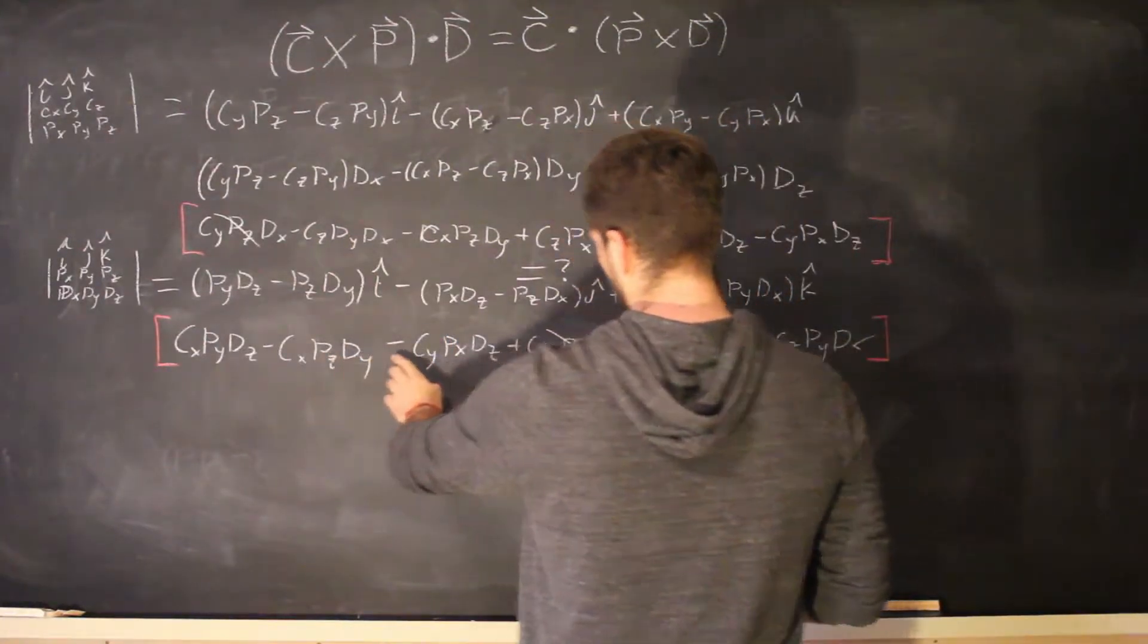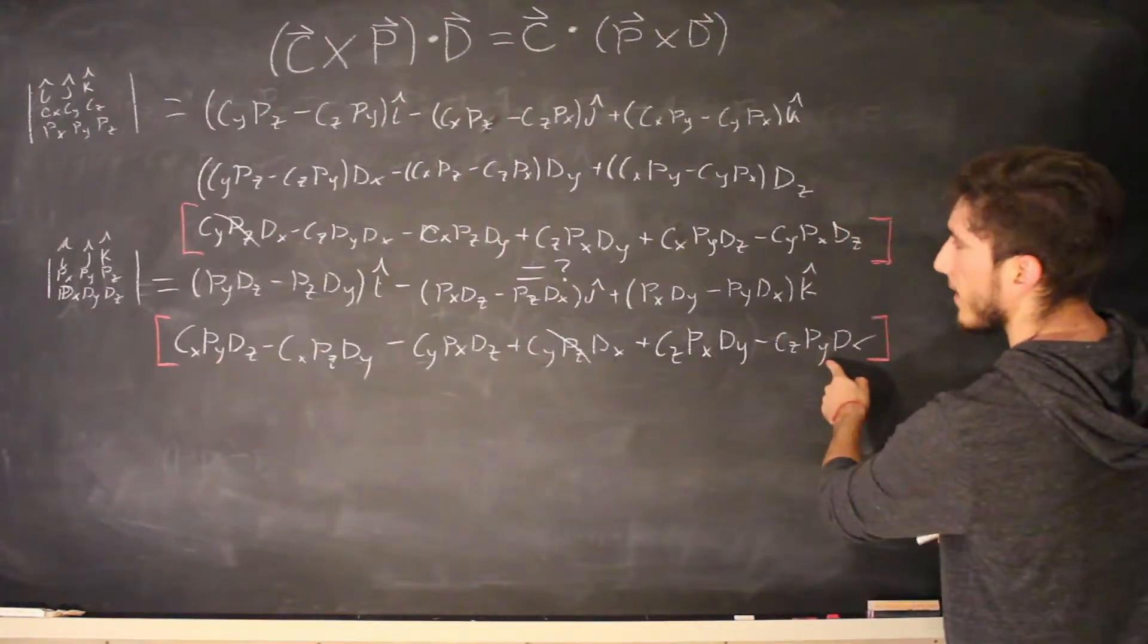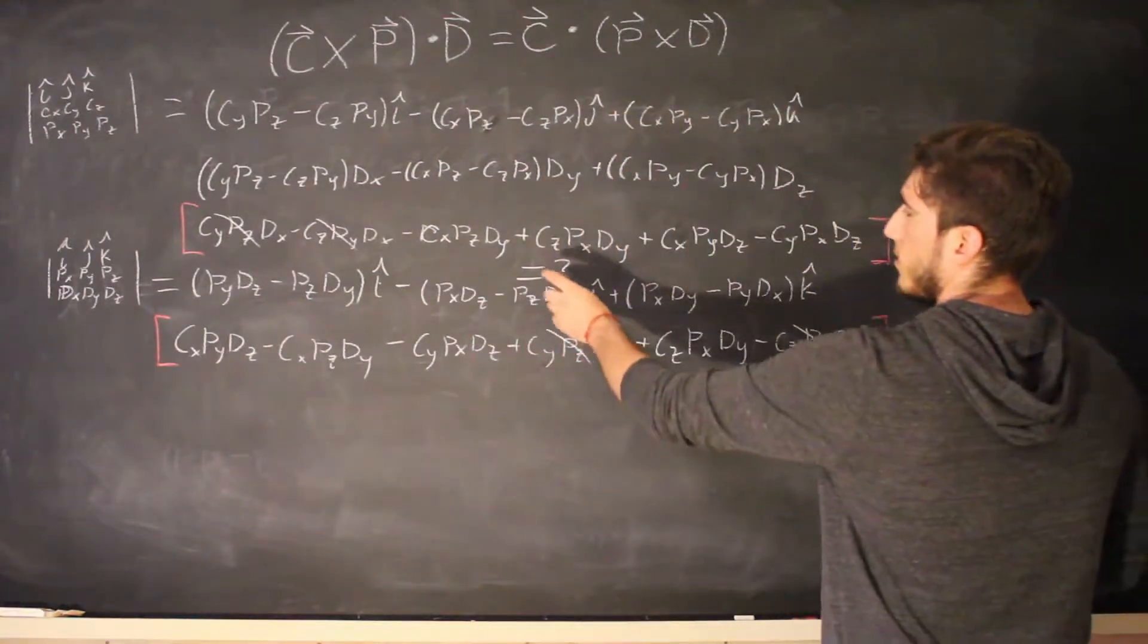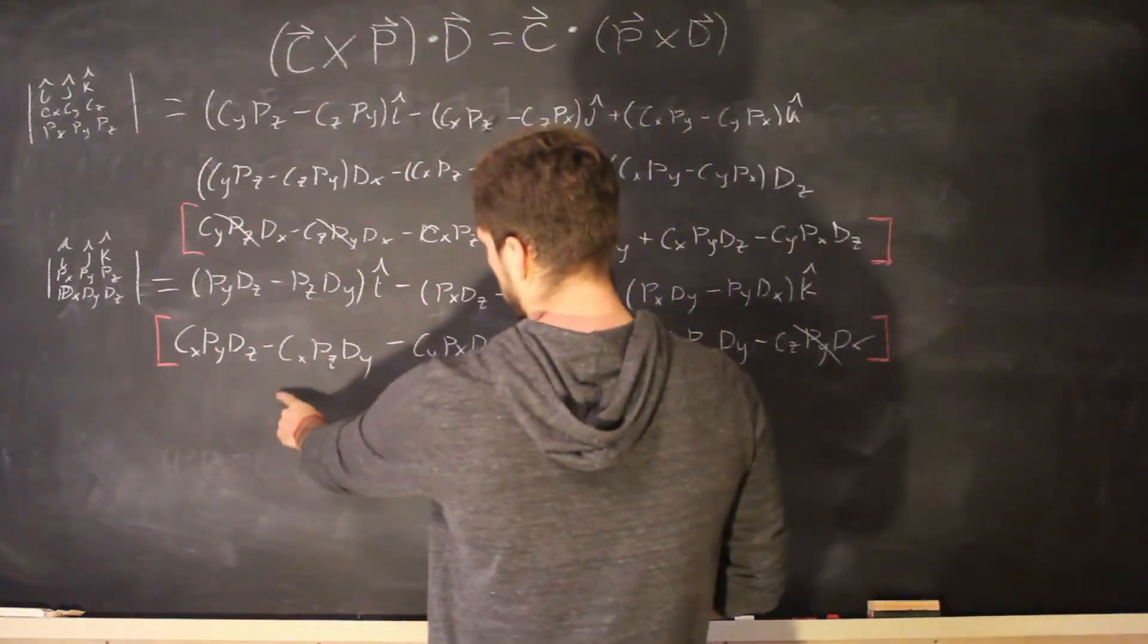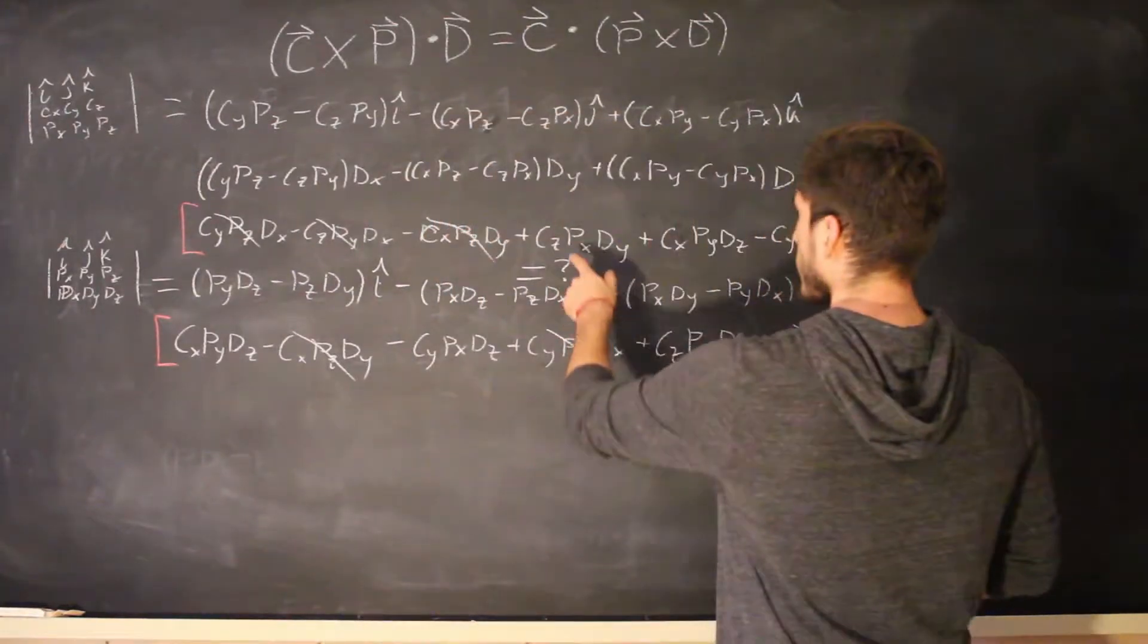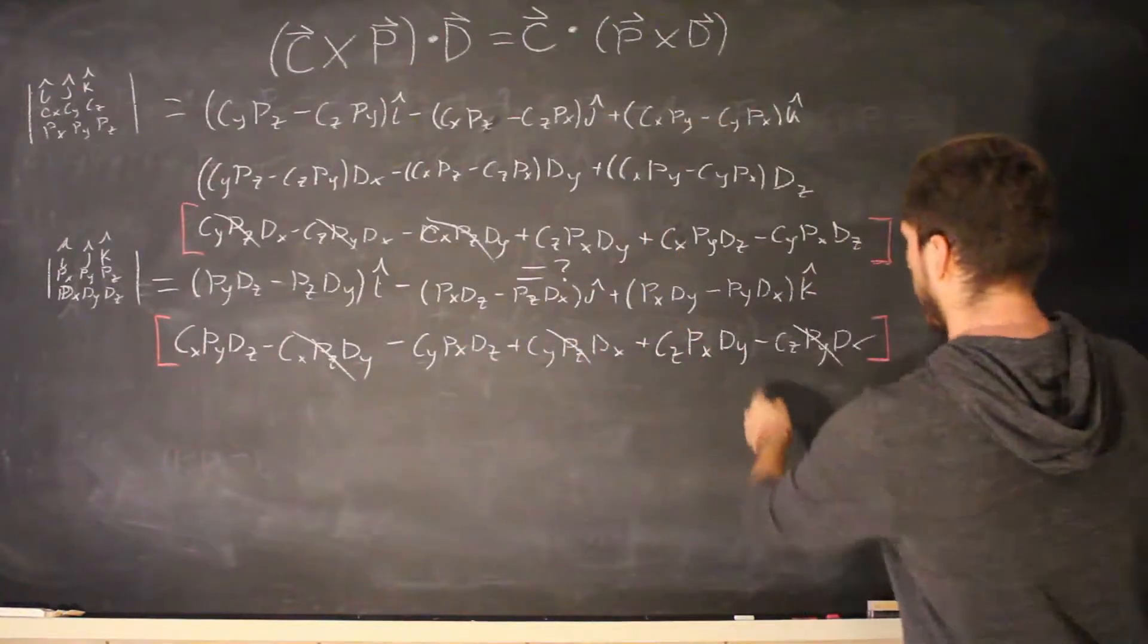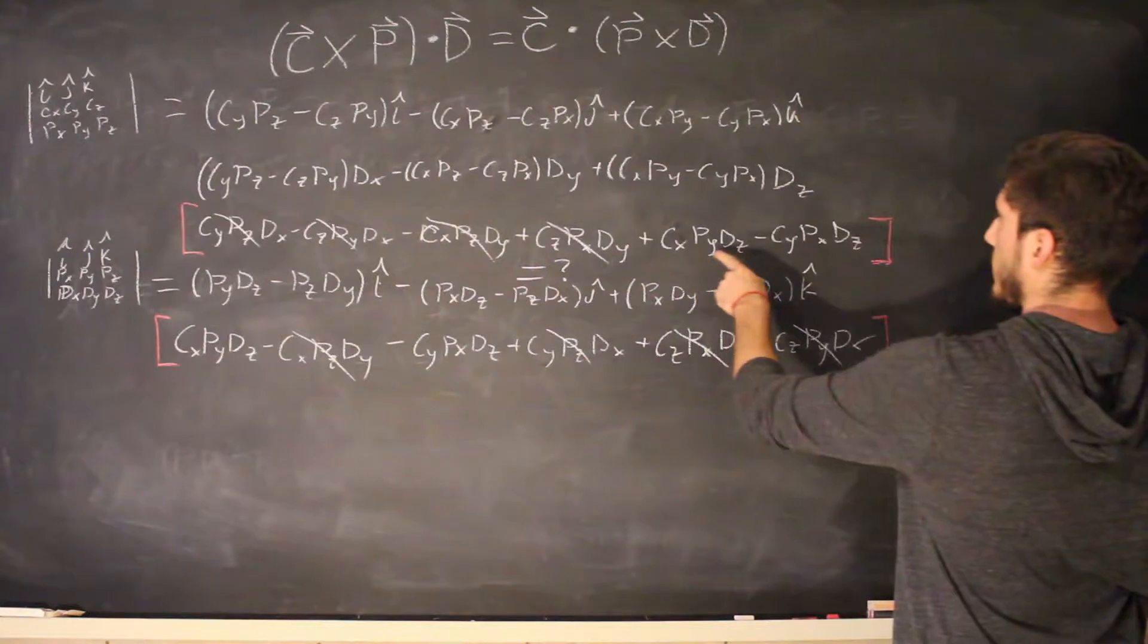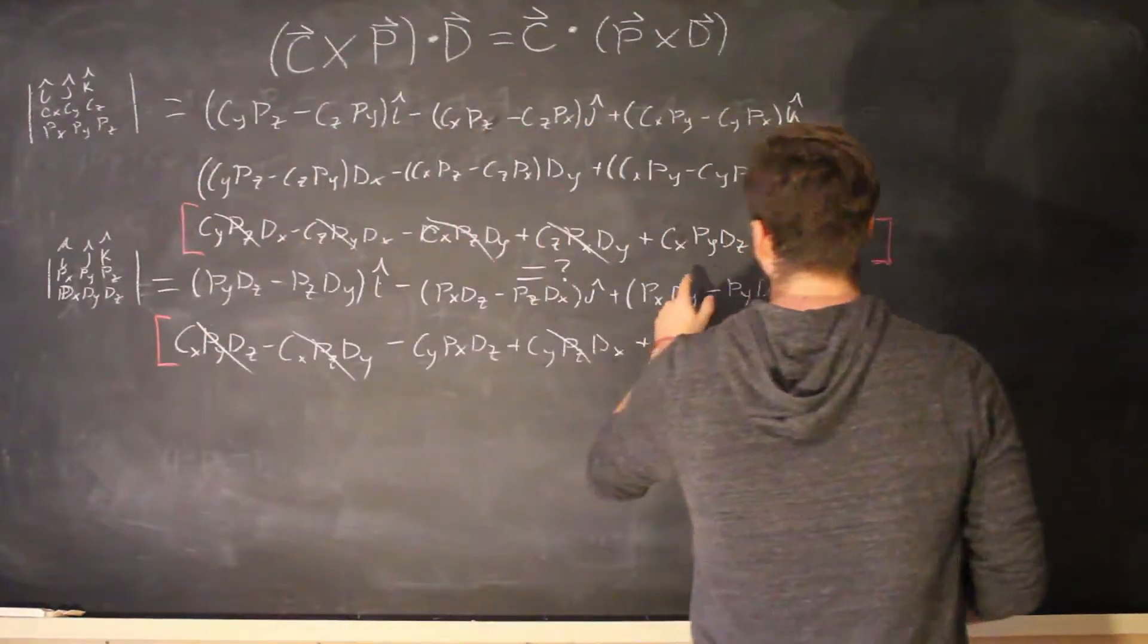so we're looking for CZ PY DX and they're both negative and now we're going to do negative CX PZ DY negative CX PZ DY that cancels out CZ PX DY CZ PX DY CX PY DZ CX PY DZ